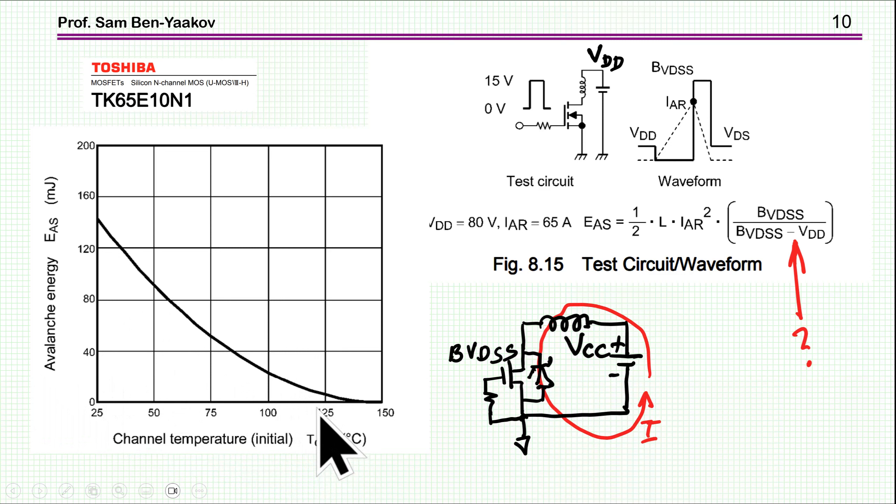Why is this? Because the transistor ability to absorb energy depends on how long it can sustain the energy before the junction temperature goes up above 175. So if you are already close to it, like 125 case temperature, then the amount of energy that can be absorbed until you get to 175 is small.